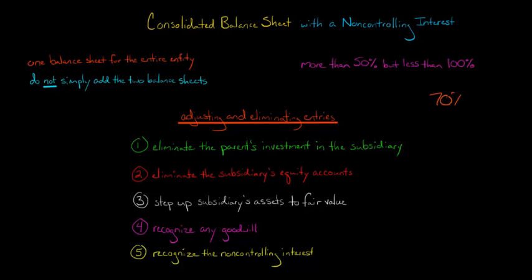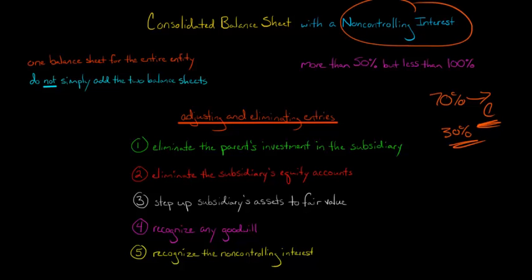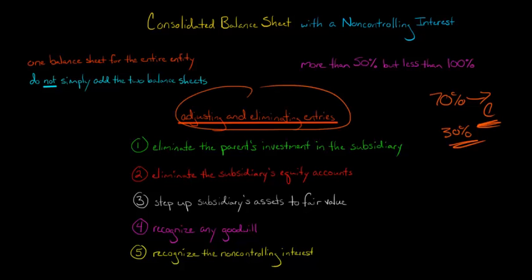For example, if you acquire 70% of a target company — let's call it company C — you are going to get 100% of C's assets and 100% of C's liabilities, but there's still some other shareholder that has a claim of 30% against those net assets. And so that's a non-controlling interest. It was formerly called minority interest. So we're still going to do these adjusting and eliminating entries that we talked about in the previous video.